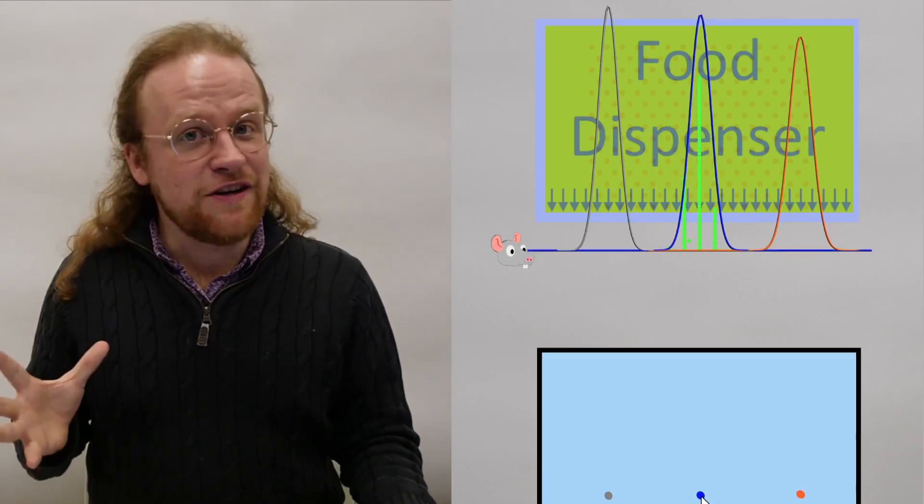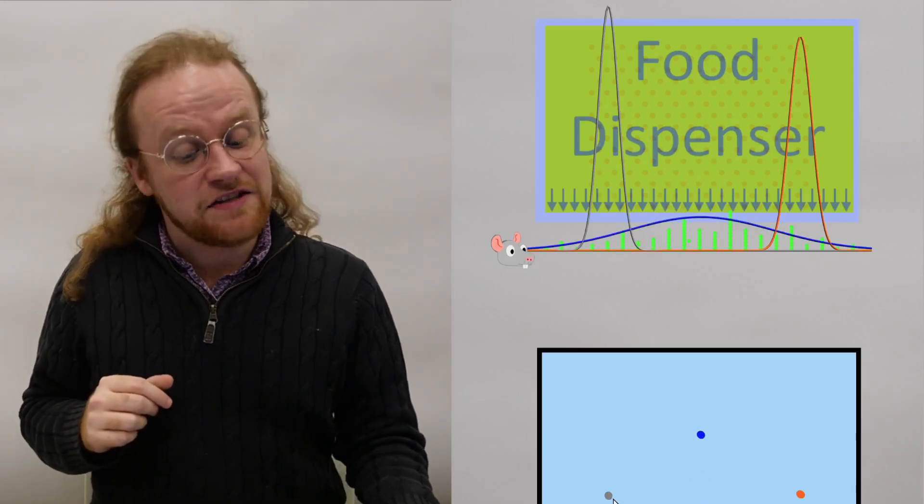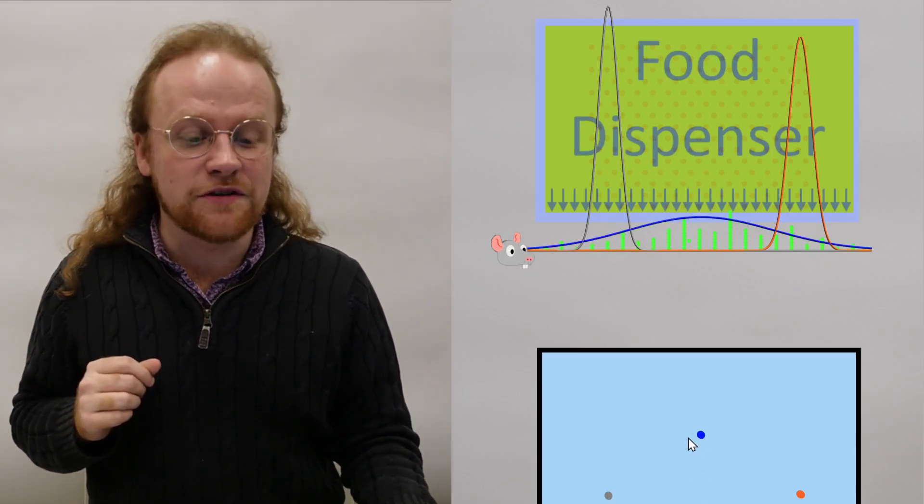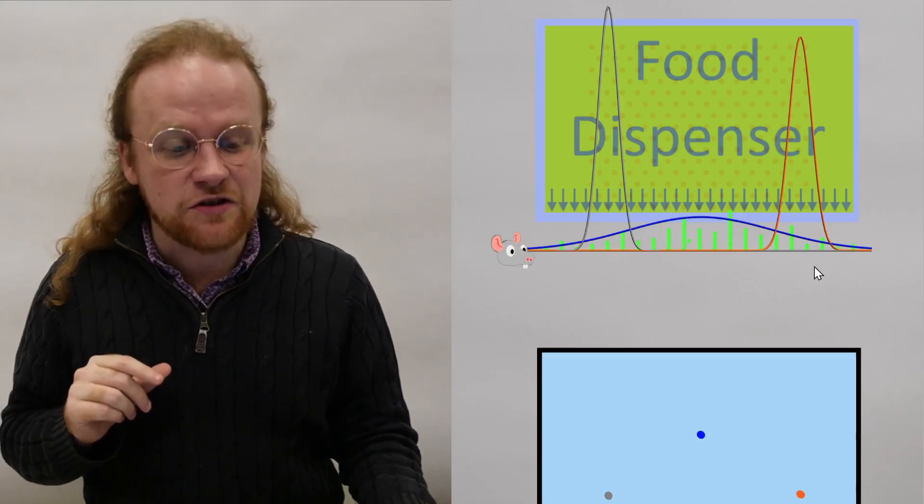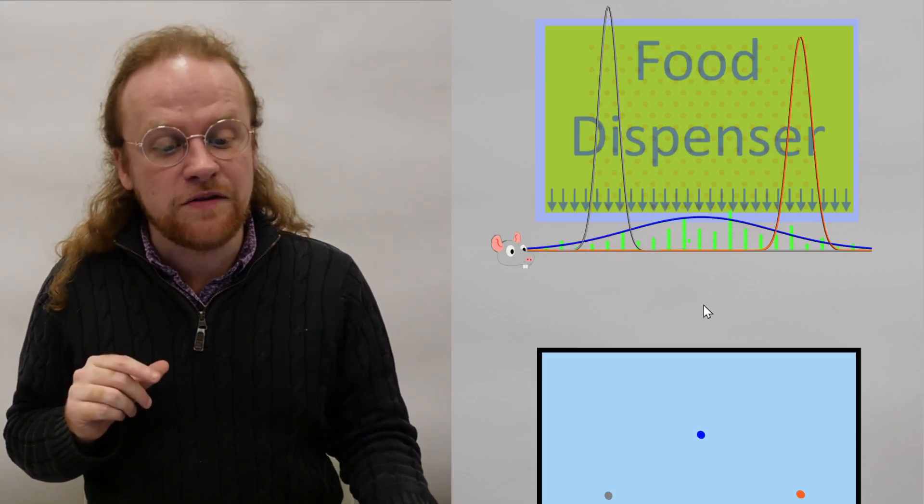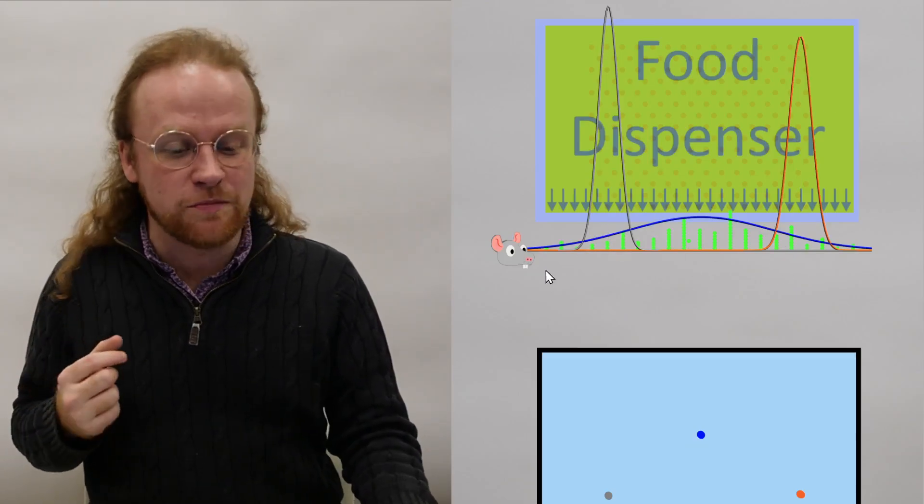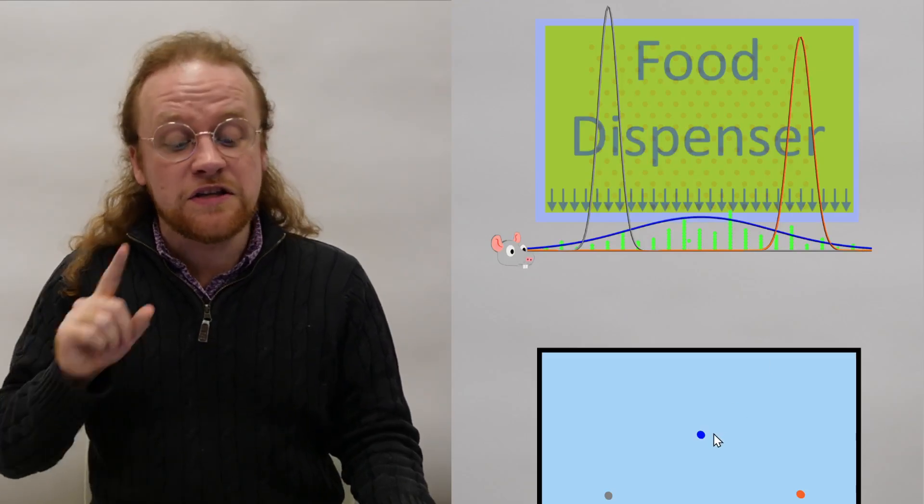Consider instead this point here, diagonally up from the grey point. This point may not seem very much like these two, but the results of both of these distributions is quite plausible if you had a belief like this one. So this is the natural midpoint of these two points.